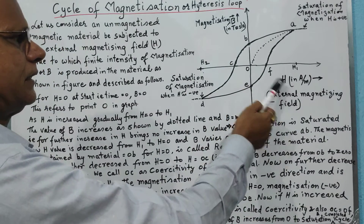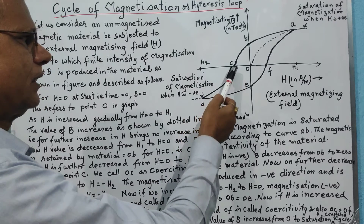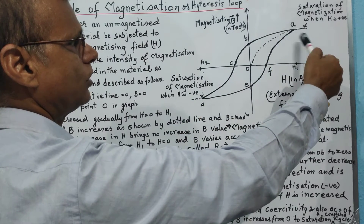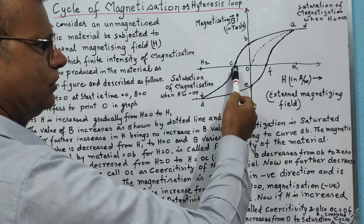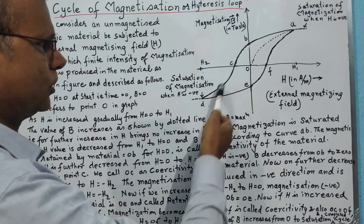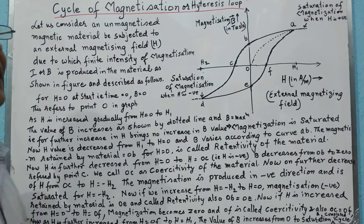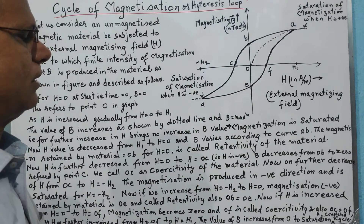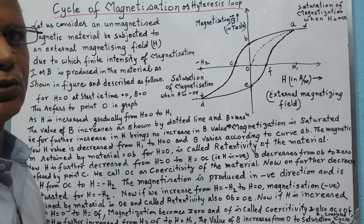If the external magnetizing field is further decreased — made more negative and greater in magnitude — the intensity of magnetization is now developed in the reverse direction compared to the previous case. It increases from zero at point C to a maximum at point D, corresponding to H equal to minus H2. This is again saturation: any further decrease in H does not increase the intensity of magnetization.